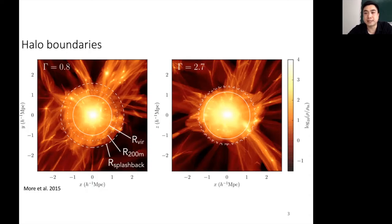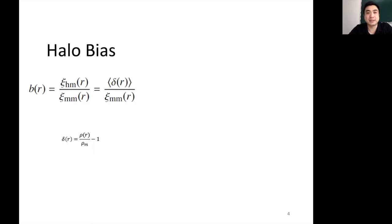The region we're going to be discussing today is the region outside of these rings, where you see matter flowing into the halo. We found that this region is actually becoming depleted for growing halos, which is the reason we call it the depletion region. Before going into the depletion region, I want to discuss the definition of the characteristic depletion radius, which helps characterize this region.